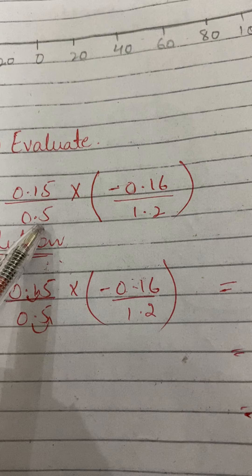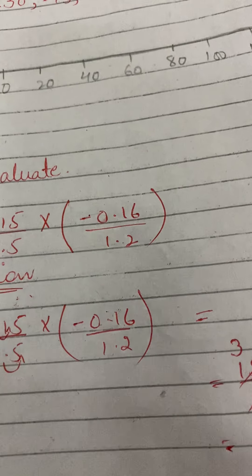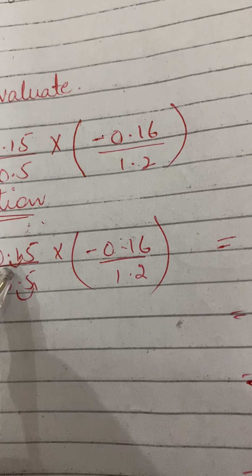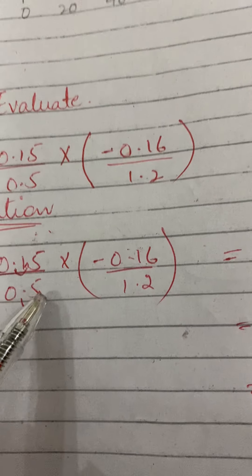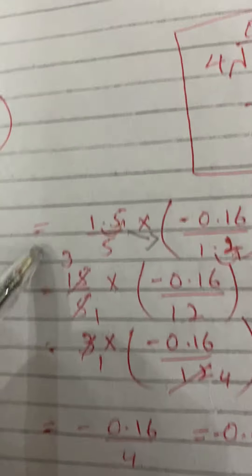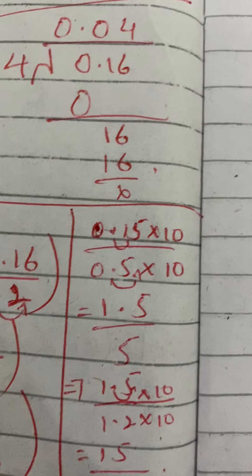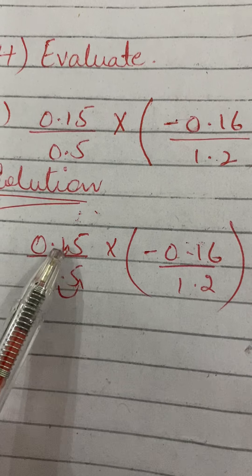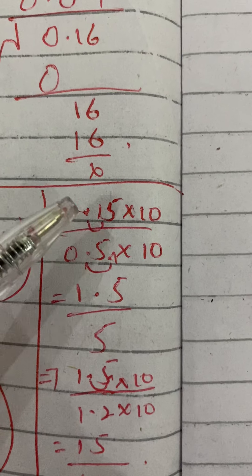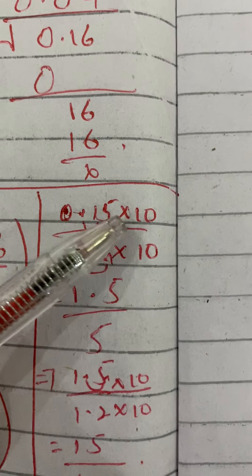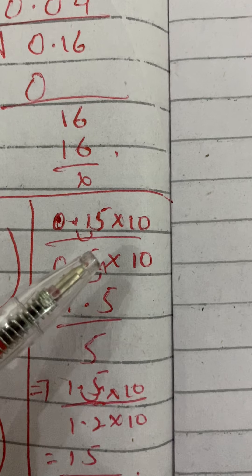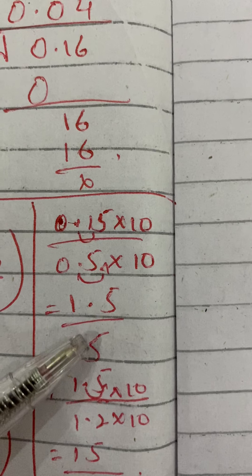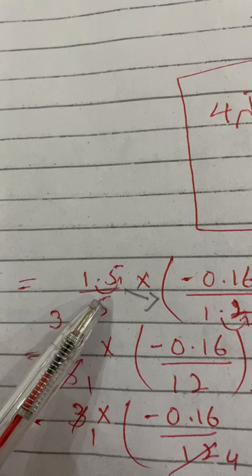Our first fraction is 0.15 over 0.5. We need to change the decimal numbers into whole numbers. There is no need to write 'multiply 10' in every step — you can do it in rough work. Multiplying both by 10: 0.15 × 10 = 1.5 and 0.5 × 10 = 5. So we have 1.5 over 5.